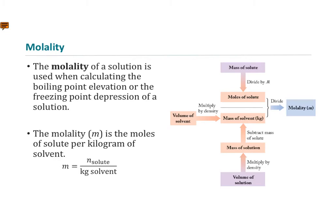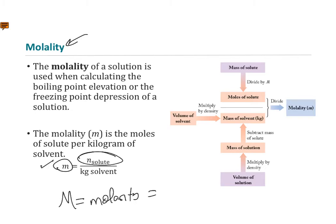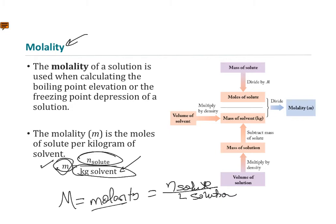Let's go over calculating molality — it's easy to mix up with molarity. Molality is abbreviated with a lowercase m, and molarity with an uppercase M. Molality is moles of solute over kilograms of solvent — the numerator is the same as molarity, but molarity uses liters of the entire solution, whereas molality uses only the mass of the solvent in kilograms. The reason we use molality is that it does not change with temperature, whereas molarity — because it has a volume term — can change slightly with temperature.